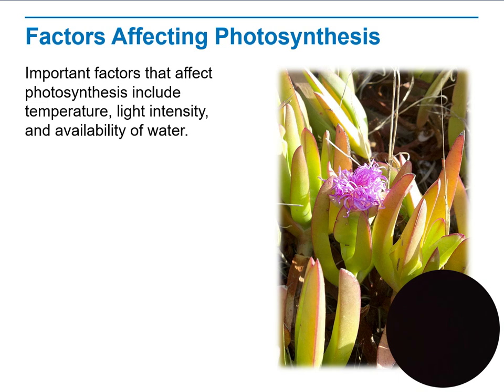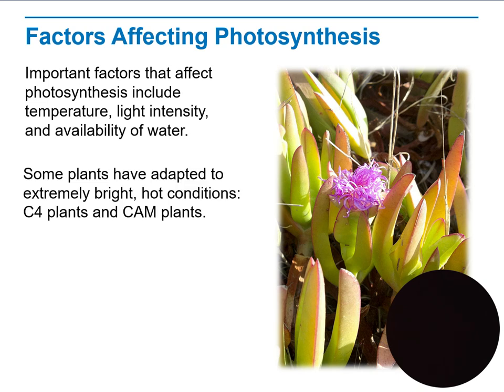There are factors that can affect the production of photosynthesis, including temperature, light intensity, and availability of water. Some plants have adapted to extremely bright or hot conditions — C4 plants and CAM plants are examples of this.